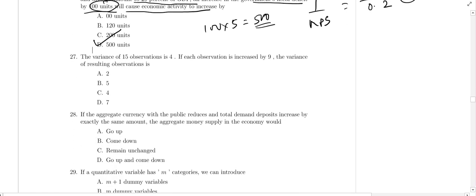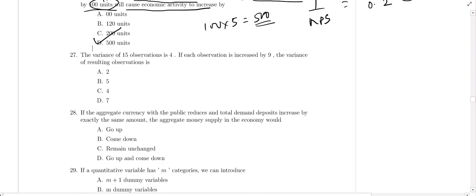Question 27: The variance of 50 observations is 4. If each observation is increased by 9, the variance of the resulting observations is still C, 4, because it is independent of change of origin. This is an origin change, so there is no effect.